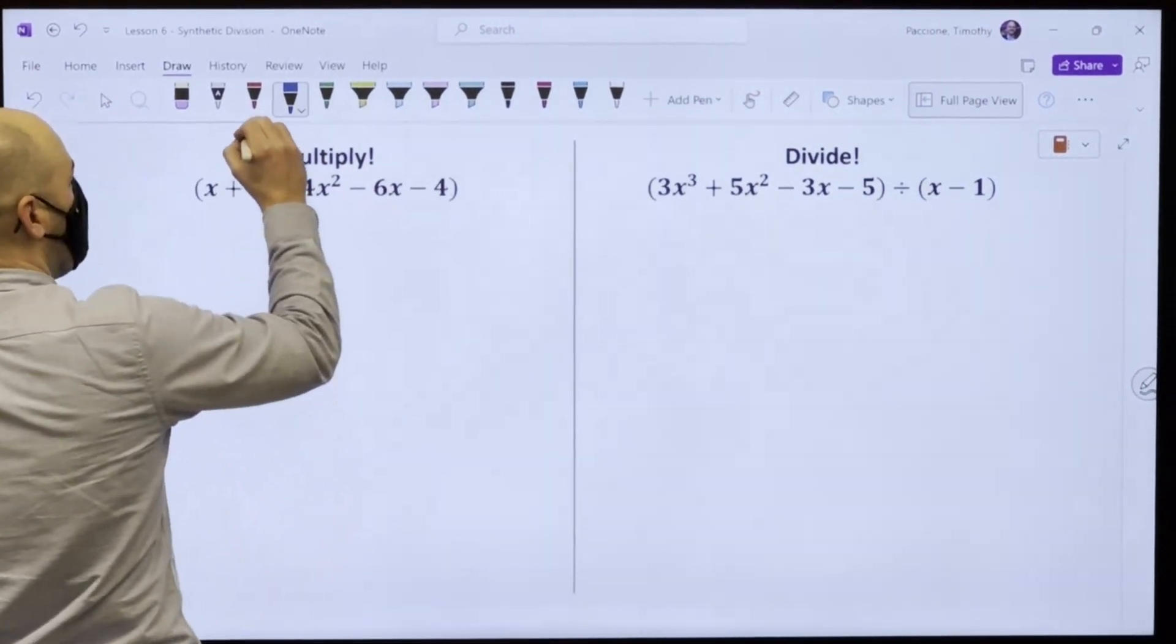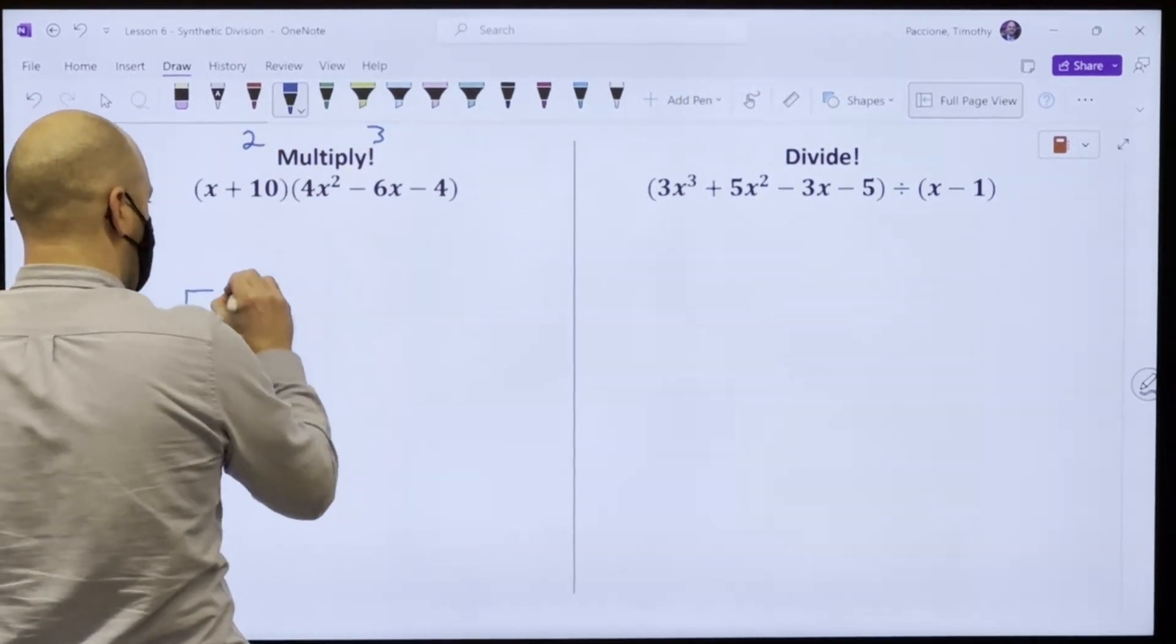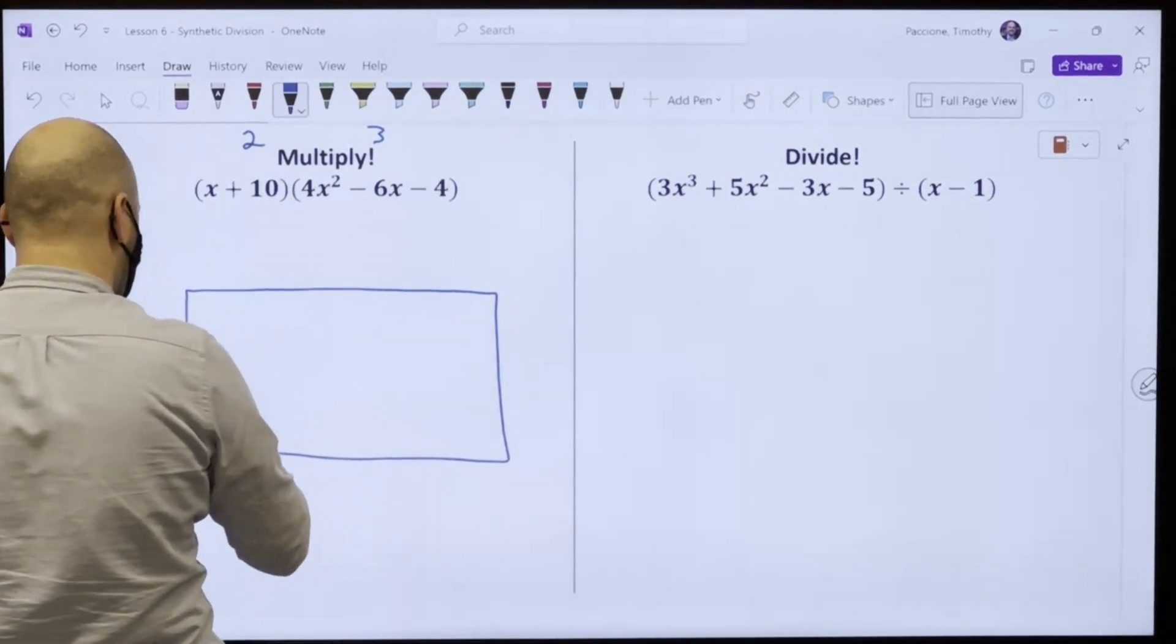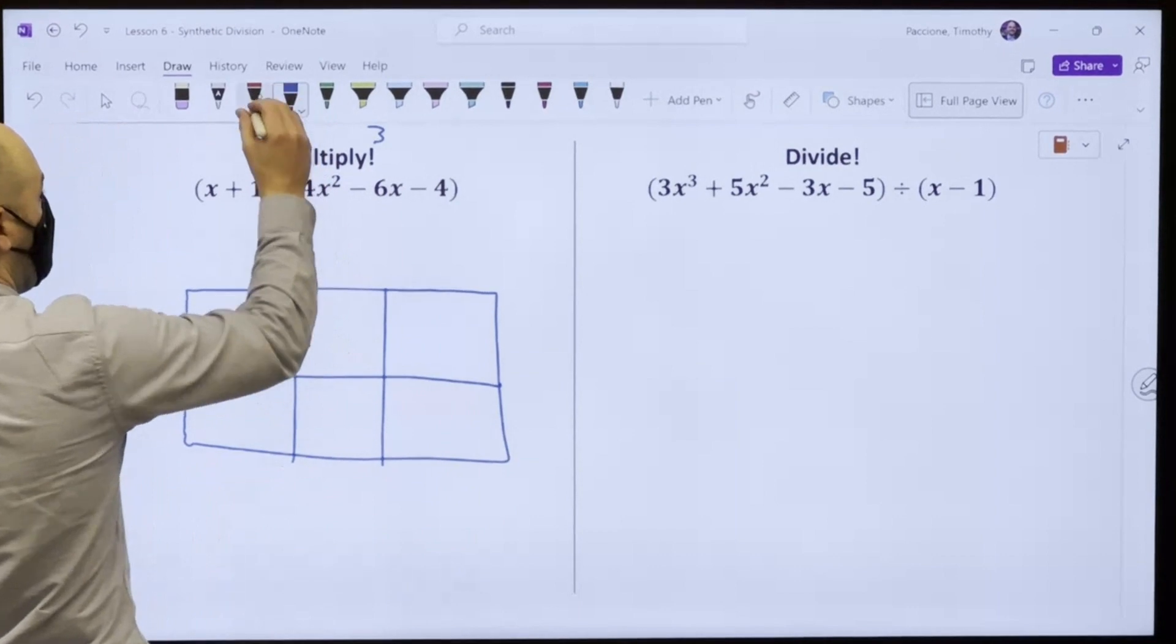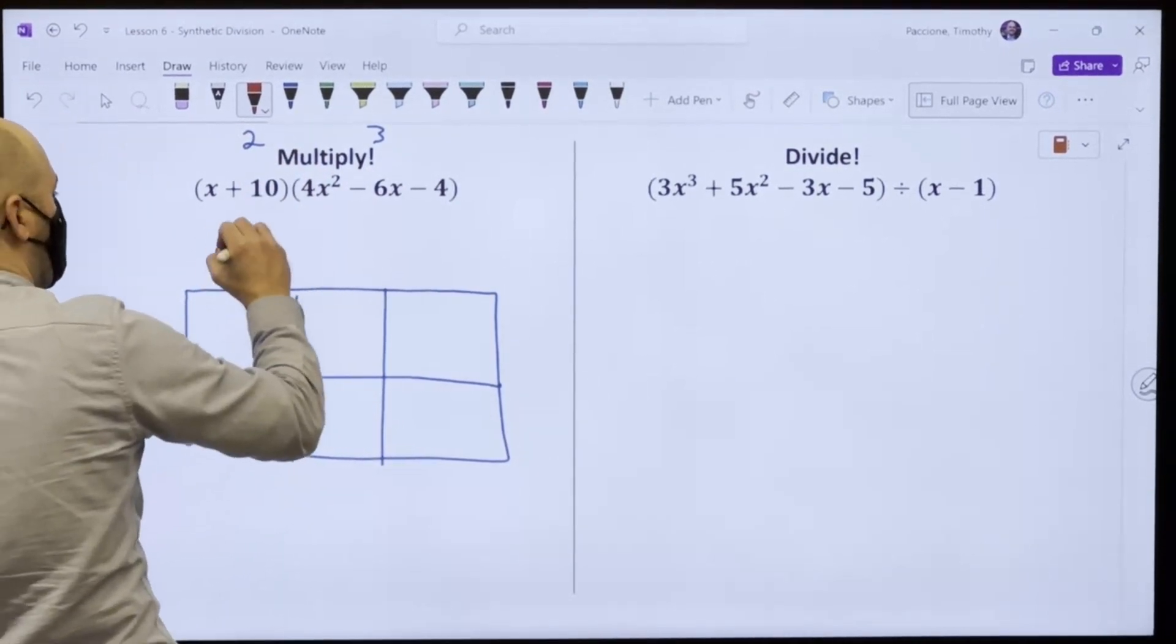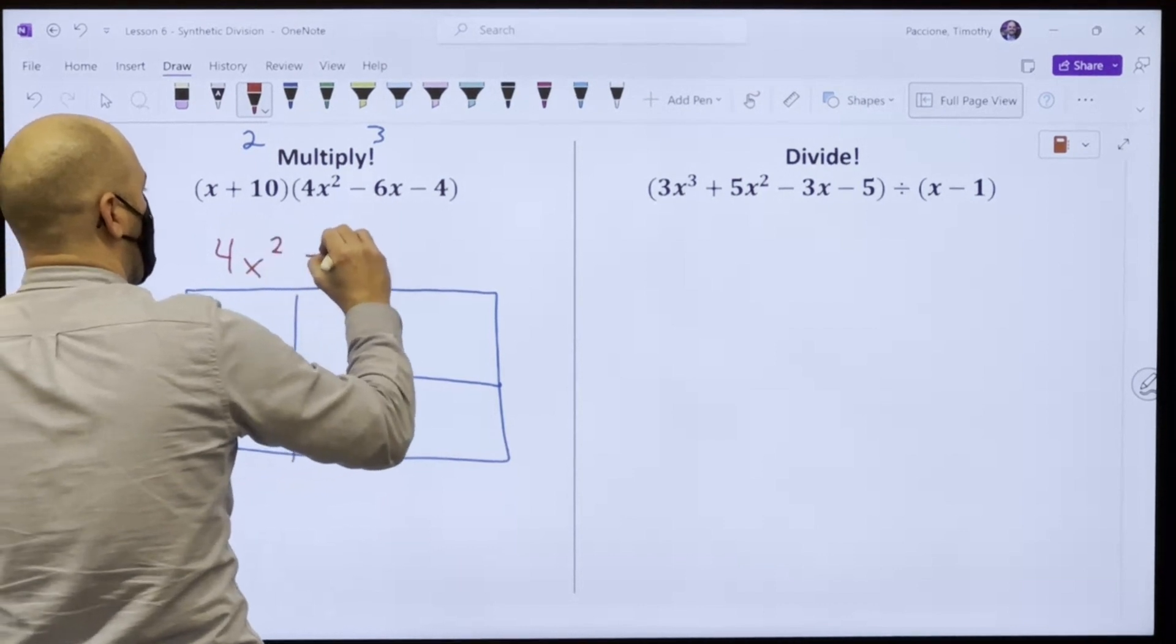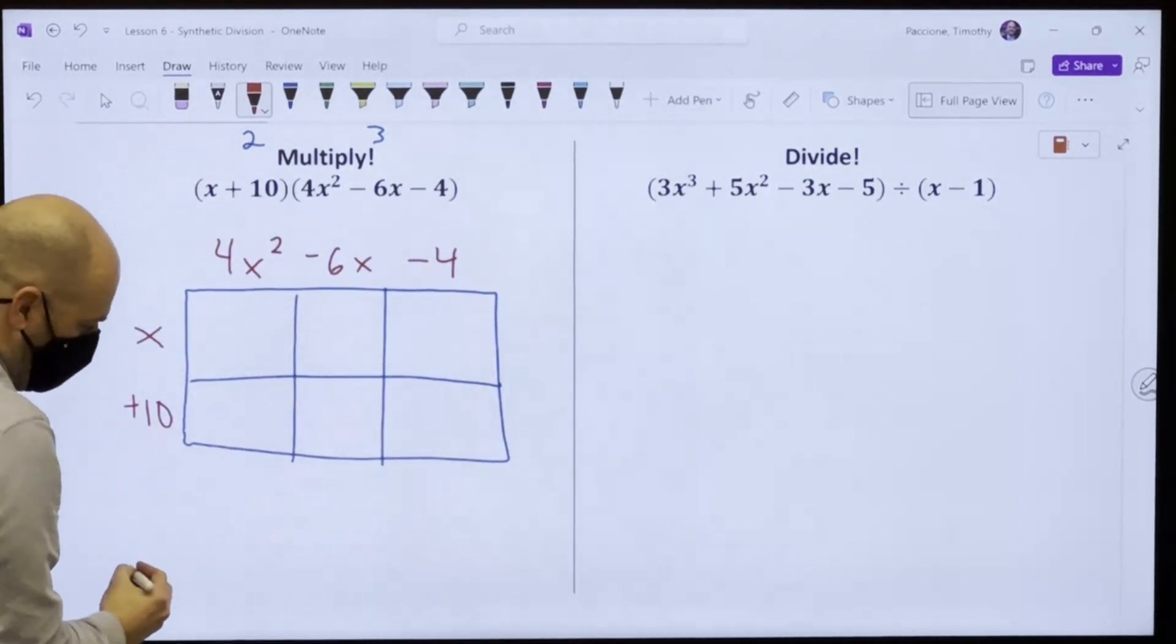So this is two terms and this is three. So I would go one, two, one, two, three, make my box. And I put the two terms out here and the three here, fill in all my boxes and then I'll give you my answer.